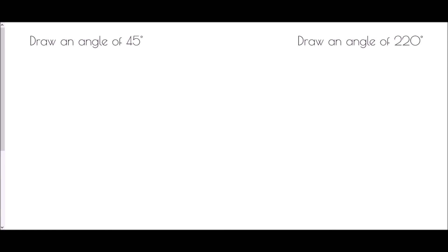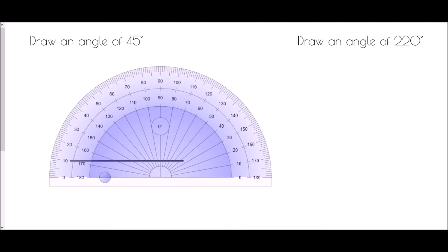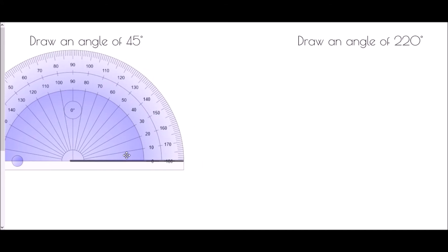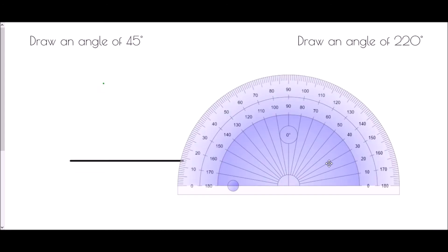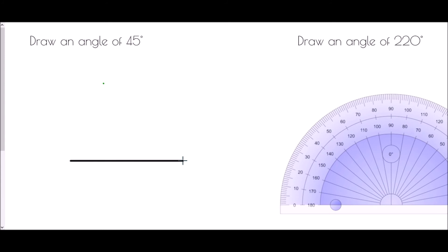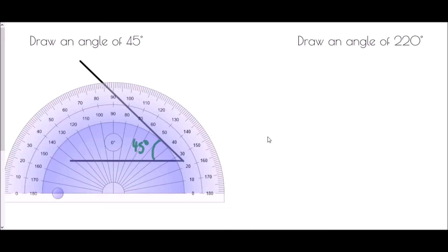Drawing an angle of 45 degrees — same thing: start with a straight line, take your protractor and place it on that line. We could do this from the other side; if I line it up on the right-hand side I just need to be aware that the zero is on the outside numbers this time. So 10, 20, 30, 40 — 45 degrees is just here. I take my protractor away and draw from the right-hand side through the point. The 45 degrees is on the inside.